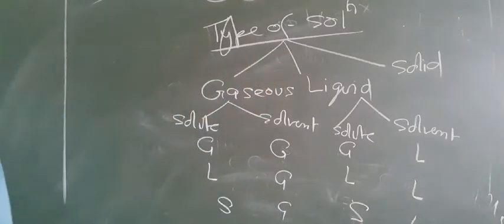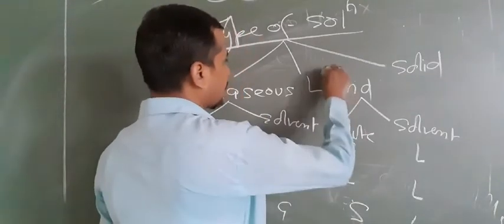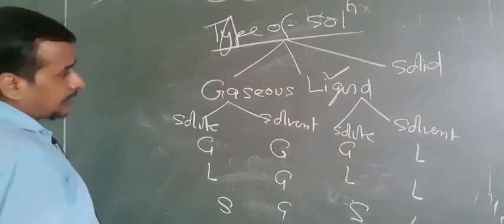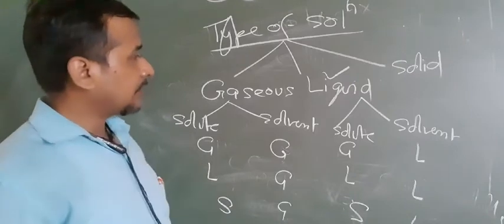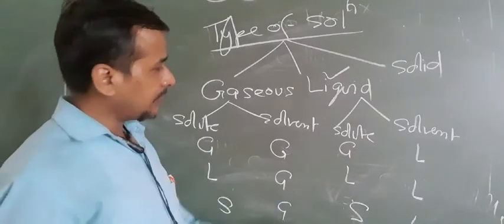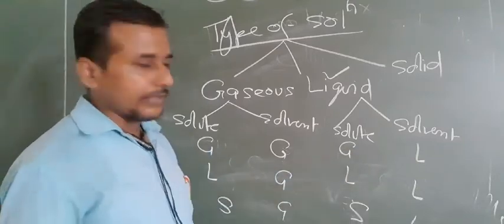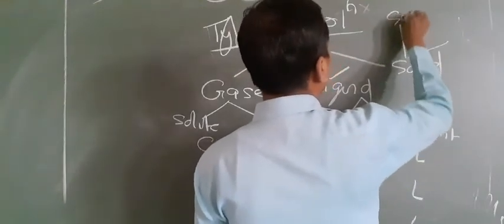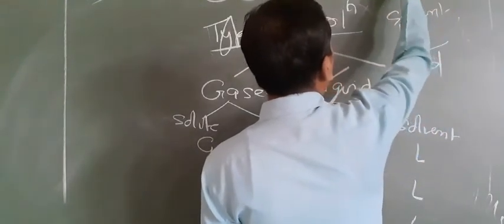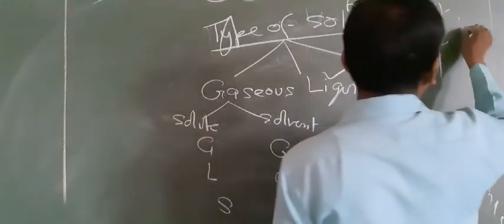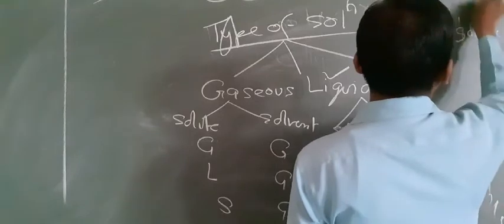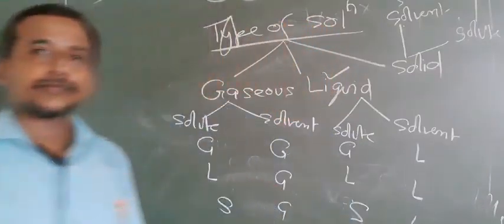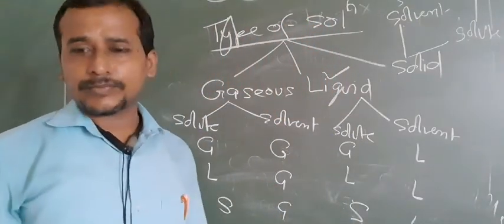In this chapter, we basically have to focus on the liquid solution. For liquid solvent: solute may be gas, liquid, or solid. For solid solutions, the solvent is solid, but solute may be solid, liquid, or gas. By this way, you can see that there are a total of nine types of solutions.